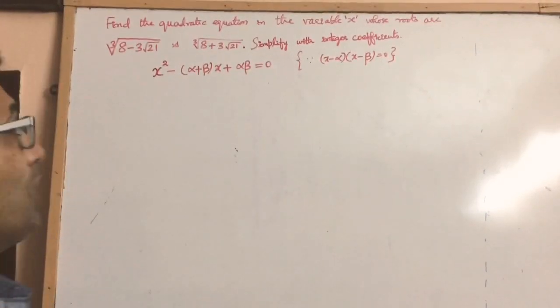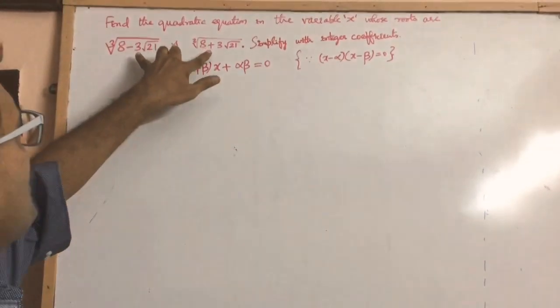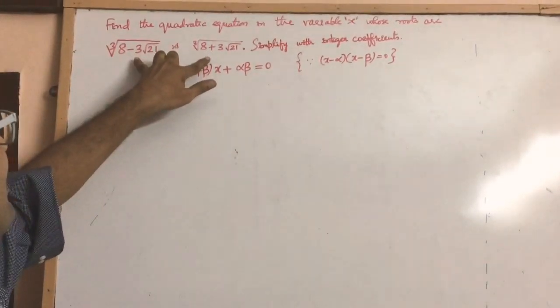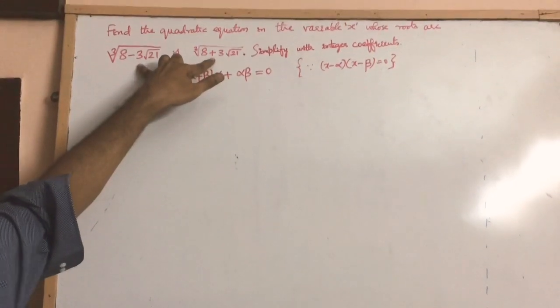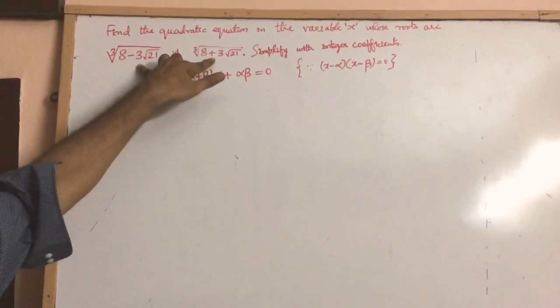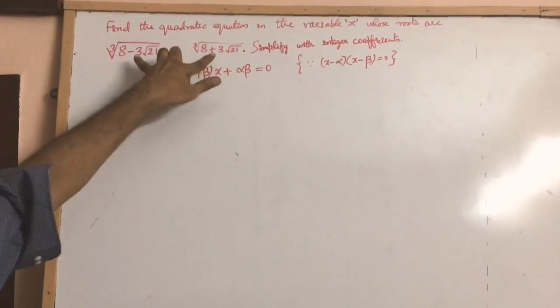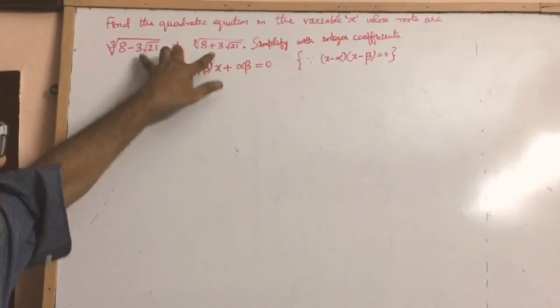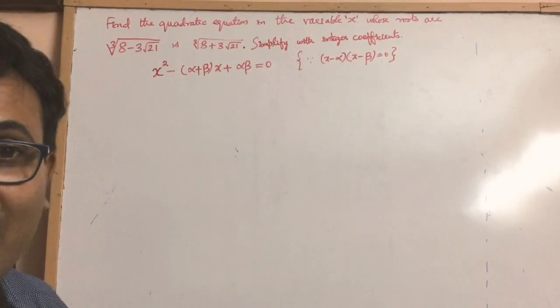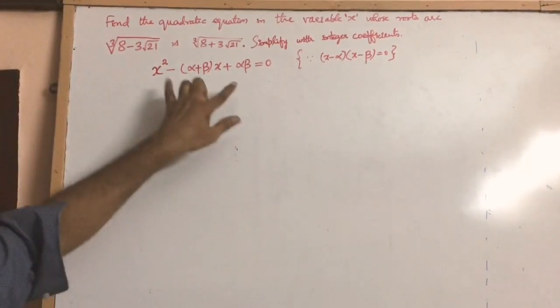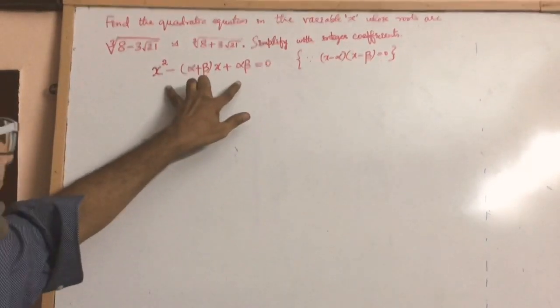So now we are given that the roots are these two values. What we need to find is the sum of these two numbers and their product, and then we can substitute into this formula.